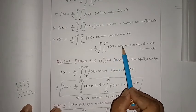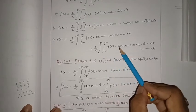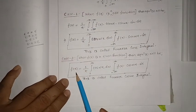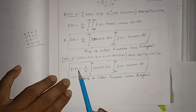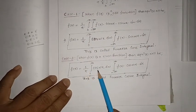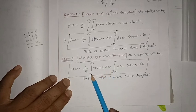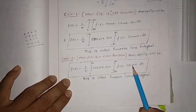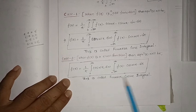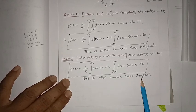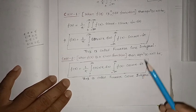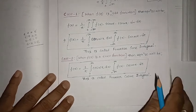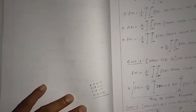Likewise, when f(t) is an even function, even times odd is odd, so that second term cancels out. Only the first term remains and we get f(x) = one by pi, integral zero to infinity cos(ωx) dω, integral minus infinity to plus infinity f(t) cos(ωt) dt. This is called the Fourier cosine integral. These two expressions you have to remember for your numericals.